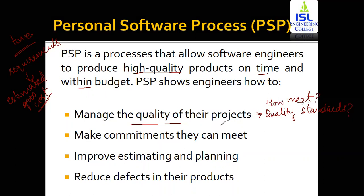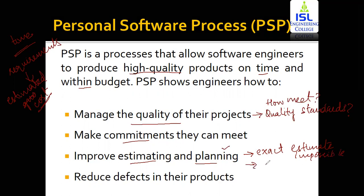PSP teaches making commitments that you can meet, and improving estimating and planning. When a particular individual is given a project in the first phase, he might not be able to make the exact estimate — exact estimation becomes impossible initially. So here you focus on how to improve estimation and how to make a plan. Planning means making a schedule, identifying different risks that might occur, identifying different resources required — including different technologies and the number of people needed — and identifying the different work tasks that will be performed.